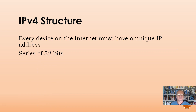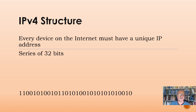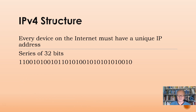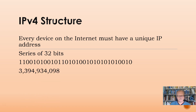If you want to participate in the internet, you have to have a unique number so that devices on one area of the internet know how to find you in order to send a transmission to you. We do this by a number that is 32 bits long. It looks something like this. If we were to translate this number into decimal, it would look something like this: 3,394,934,938. Wow, that's a big number.